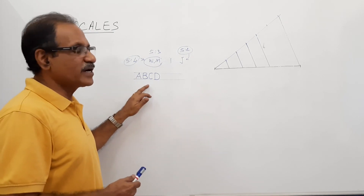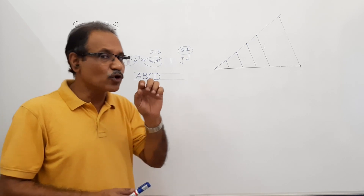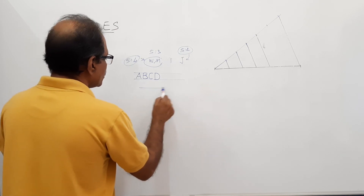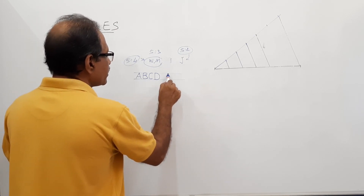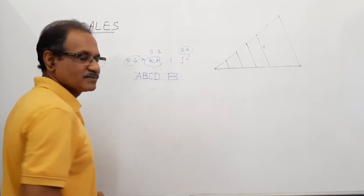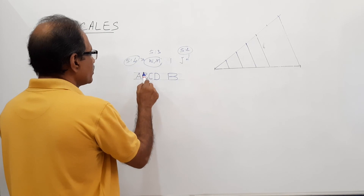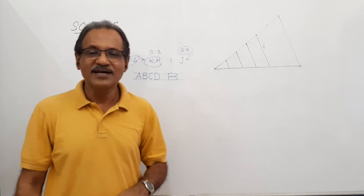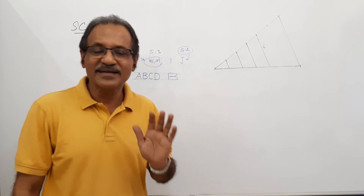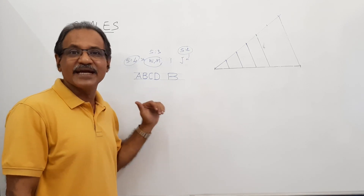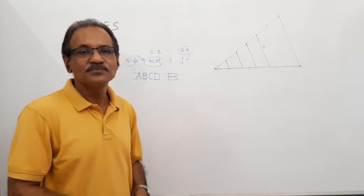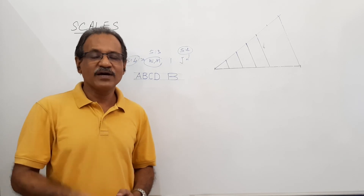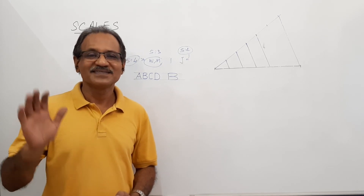Whenever you are printing, you are supposed to follow this proportion. I don't ask you to follow exact dimensions, but a proportion must be maintained. For example, don't write B with wrong proportions — write B with a proportion of 5 is to 3. From the next video onwards we will go to plain scale, diagonal scale, and vernier scale separately. Thank you.